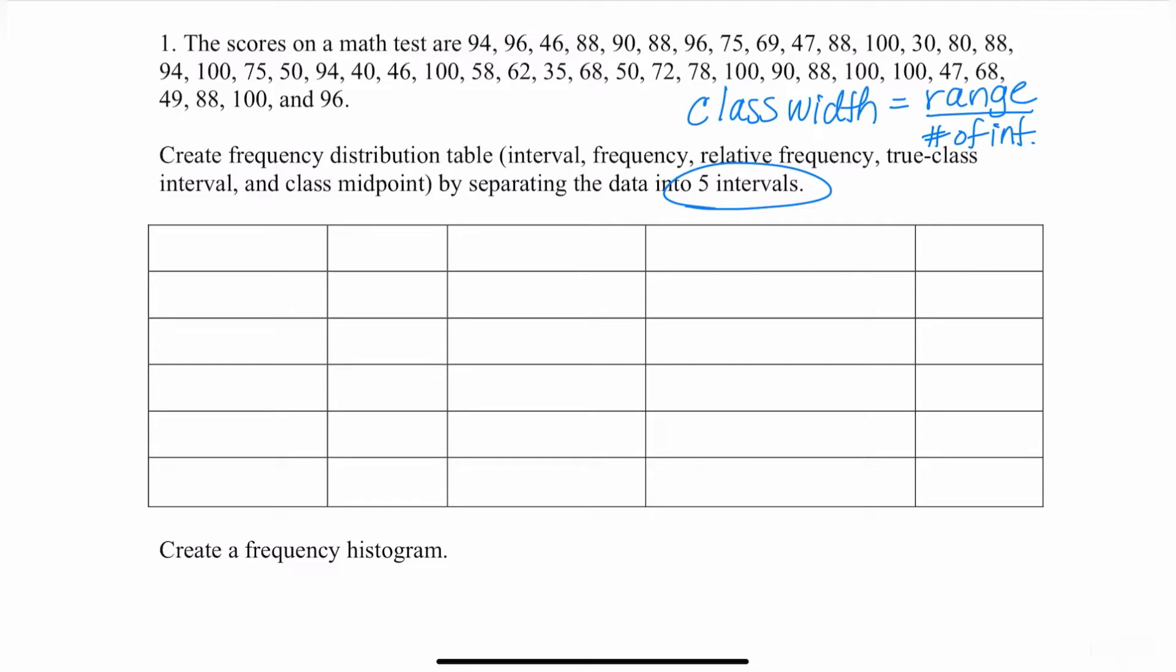So let's go ahead and look at these scores on a math test. They're not in order at all, but I can tell that the highest number is 100 and the lowest is 30. So the highest here is 100, the lowest is 30. That's my range, highest minus lowest. And they want five intervals. So when I subtract, 100 minus 30 is 70. So I'm going to divide 70 by 5, and it equals 14.